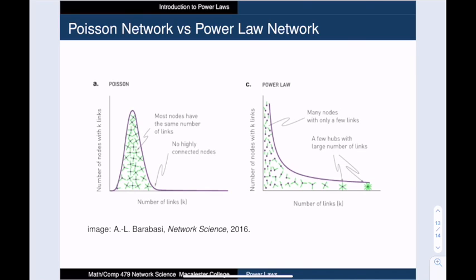This broad spread of values means that there isn't a characteristic scale for vertex degrees in a power law network. They are spread far and wide.